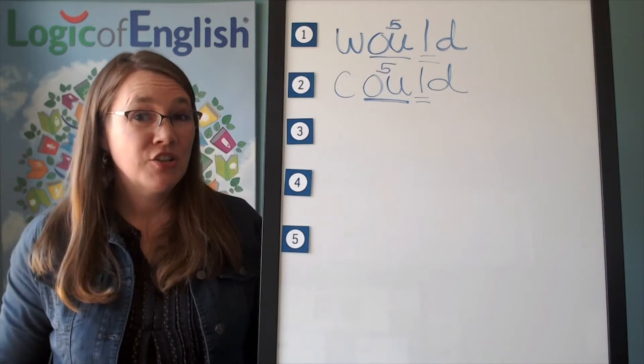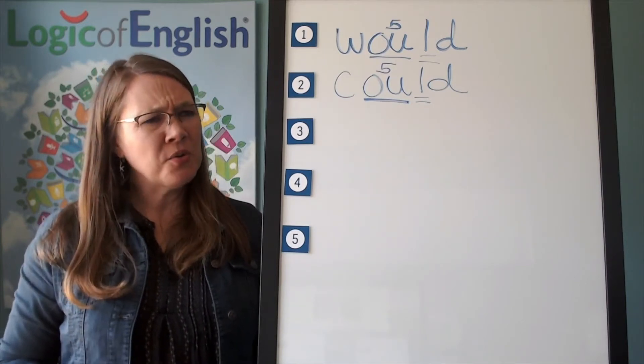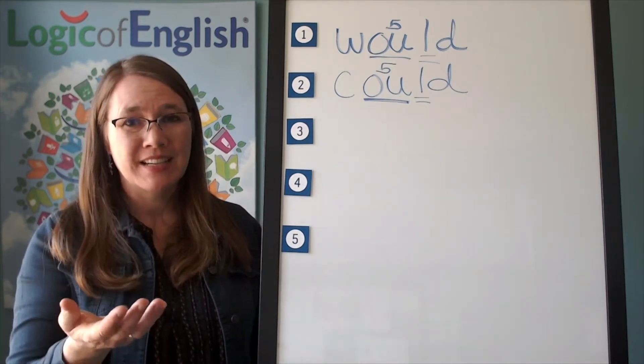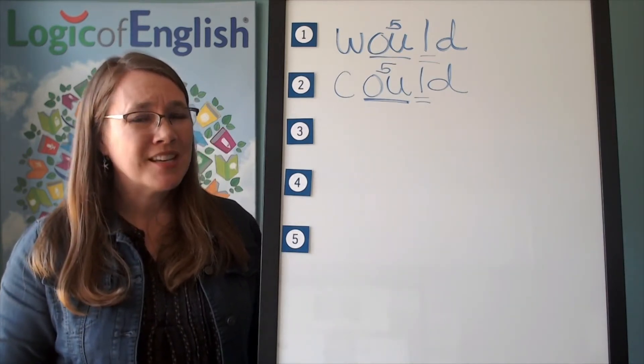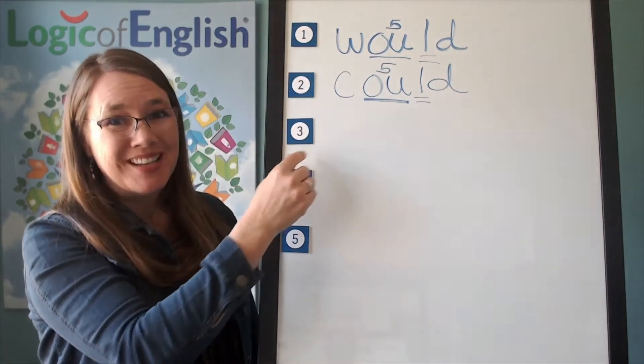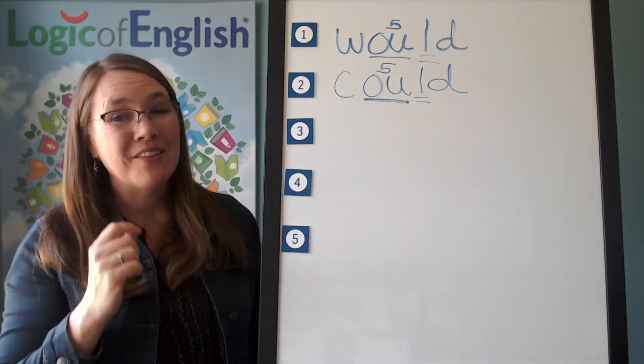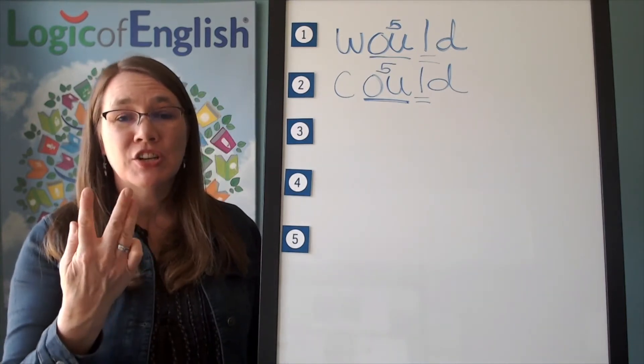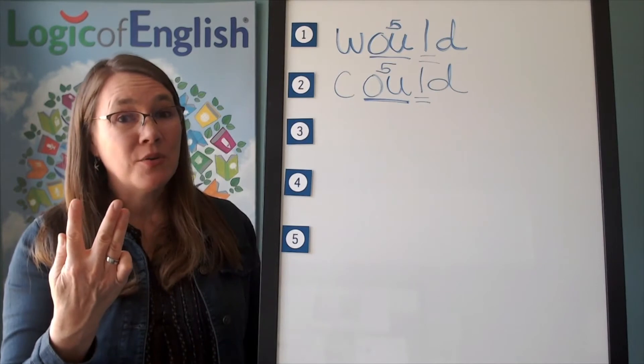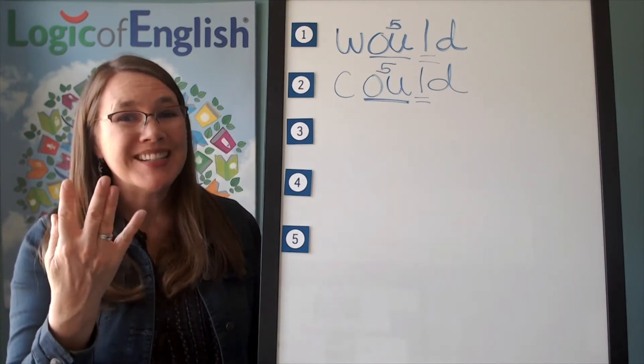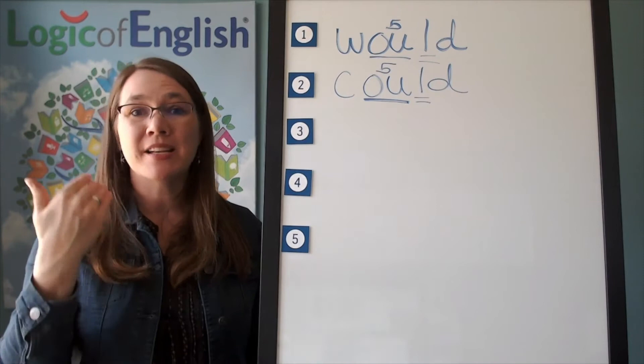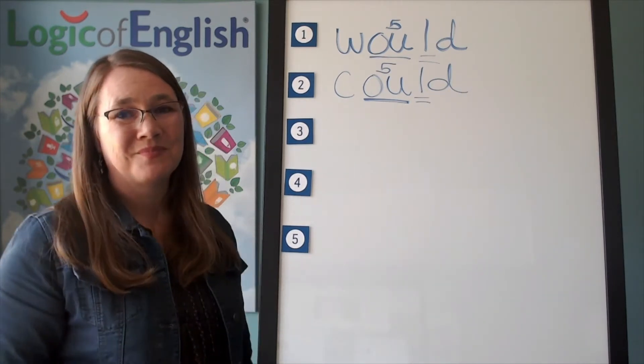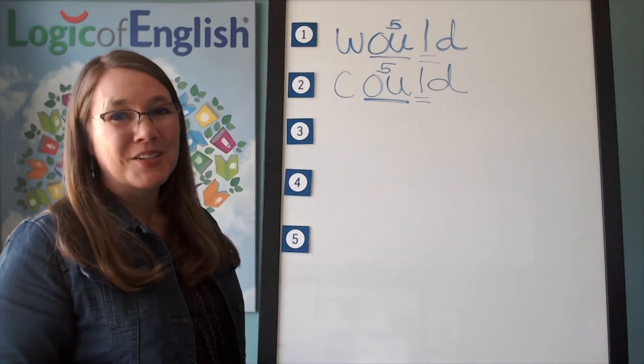The next word is should. Should I go or should I stay? Should. Go ahead and say should. Hmm. Do you think there might be a pattern? Would, could, should. I bet you already have an idea about how this is spelled. Let's sound out. Should. Sh. Uh. This is an ow, o, oo, uh, uh. Silent L. Duh. Go ahead and write should.